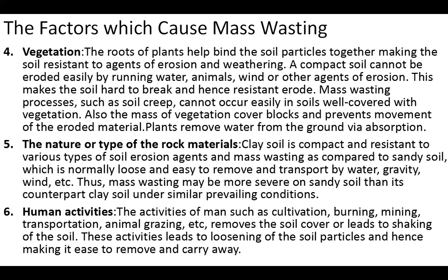Mass wasting processes such as soil creep cannot occur easily in soils well covered with vegetation. Also, the mass of vegetation cover blocks and prevents the movement of eroded materials. Plants also remove water from the ground via absorption, which helps balance the amount of water present in the soil.